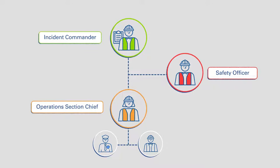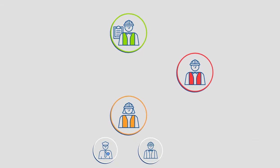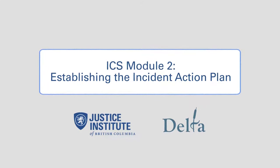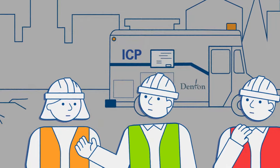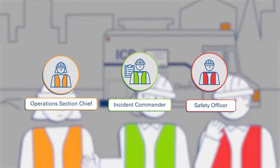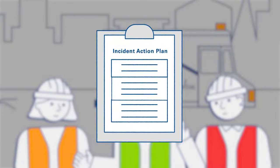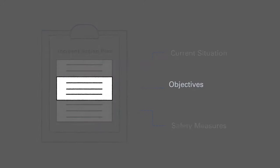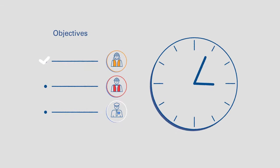This management team can now start to identify priorities and establish the action plan. ICS Module 2 – Establishing the Incident Action Plan. Several departments are responding to a water main rupture and sinkhole in Denton. The Incident Commander, from Public Works, has gathered the management team at the Incident Command post to conduct a meeting and develop the Incident Action Plan. The Incident Action Plan lists the current situation, incident objectives and safety measures, which guide response efforts. It outlines who is responsible for completing specific tasks for an operational period — a specific period of time for addressing the objectives.